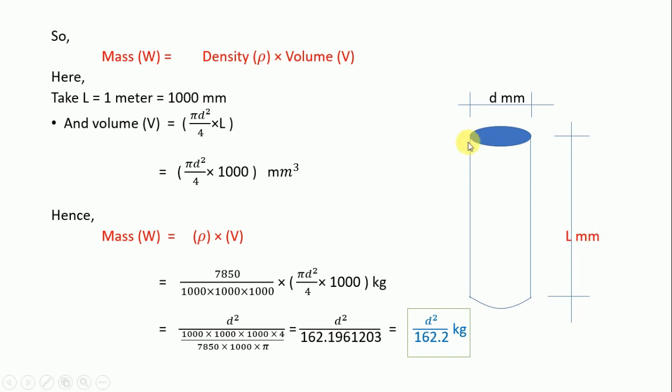Consider the bar as a cylinder with diameter d mm and length L. Take L equals 1 meter equals 1000 mm. The volume V equals pi d squared by 4 times L, which equals pi d squared by 4 times 1000 mm cube.